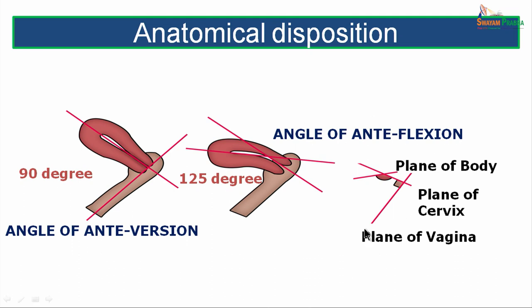The angle that the plane of vagina makes with the plane of cervix — a forward bending angle of 90 degrees — is anteversion. Whereas the angle made by the plane of the cervix with the plane of the body — again an anterior or forward bending angle of 125 degrees — is anteflexion. So, the normal non-gravid nulliparous uterus is positioned as anteverted and anteflexed. That is the anatomical disposition of the uterus.